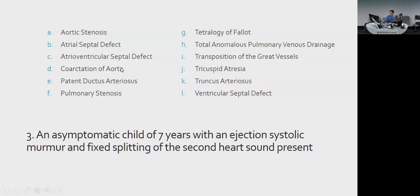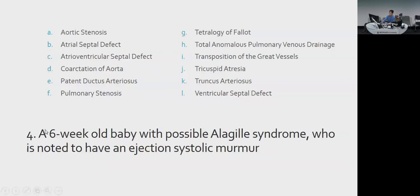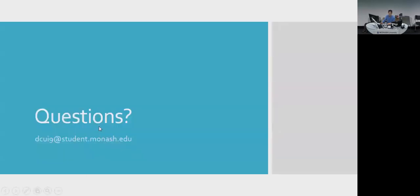The last MCQ: a child with possible Alagille syndrome noted to have an ejection systolic murmur — the answer is pulmonary stenosis. Syndromic features plus an ejection systolic murmur points to pulmonary stenosis. That's the end of the presentation. Any questions?